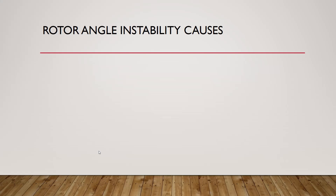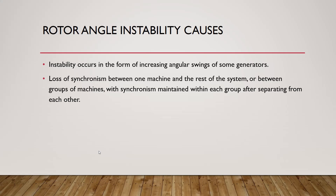When rotor angle is unstable, several consequences occur. First, it manifests as increasing angular swings of some generators, with delta increasing to infinity theoretically. Second, there is a loss of synchronism between one machine and the entire power system, or between groups of machines that are synchronized with each other but not with the rest of the power system. Additionally, rotor angle instability can cause tripping of generators, leading to loss of generation and a drop in bus voltages.